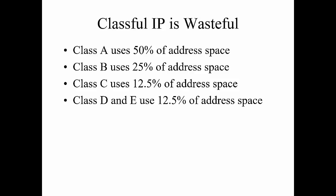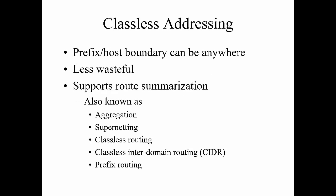This led us to classless addressing — we don't care about the class. We want to be able to manipulate that prefix or host boundary however we want, which is less wasteful. It supports route summarization and could also be known as aggregation, super-netting, classless routing, CIDR — classless inter-domain routing — or prefix routing. Normally it's just known as variable-length subnet masking, VLSM.